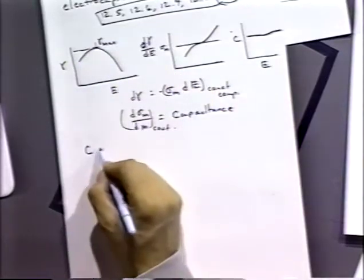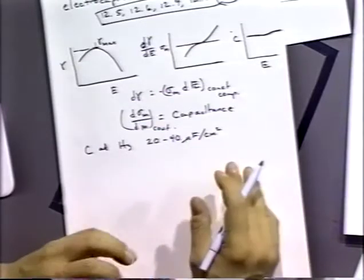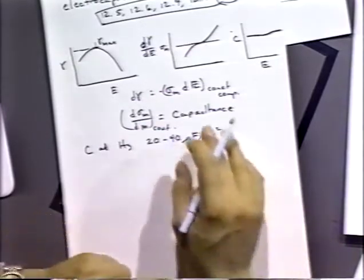It turns out that the capacitance at mercury is on the range of 20 to 40 microfarads per square centimeter. So a fairly large capacitance.